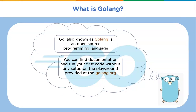Go, also known as Golang, is an open source programming language developed by Google. It is a statically typed, compiled language. Moreover, Go supports concurrent programming — it allows running multiple processes simultaneously, achieved using channels, Go routines, etc. Go language has garbage collection which does memory management and allows deferred execution of functions. It also supports networked and multicore computing. You can run your first code without any setup on the playground at golang.org.